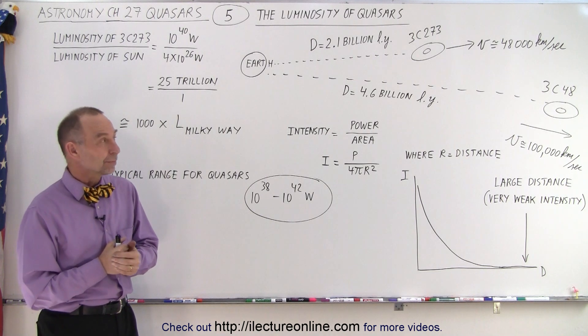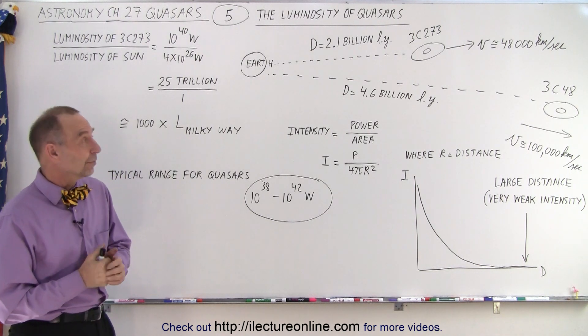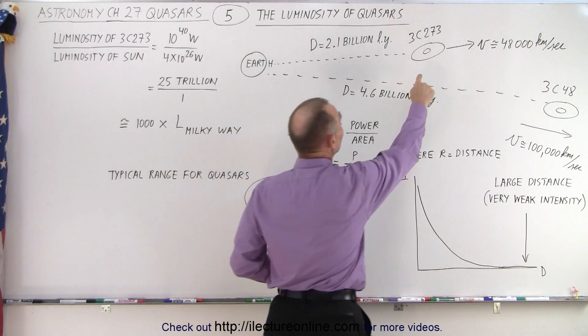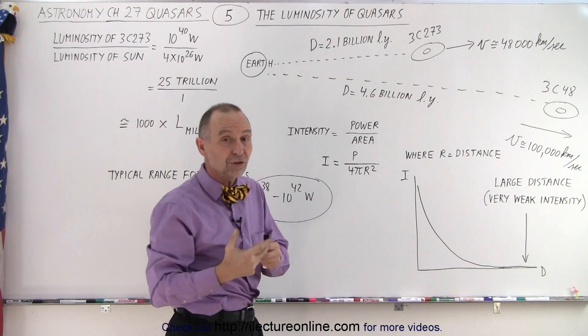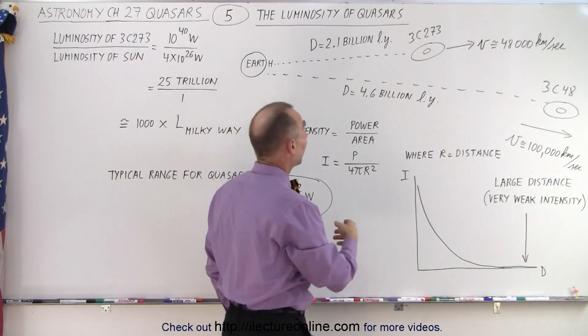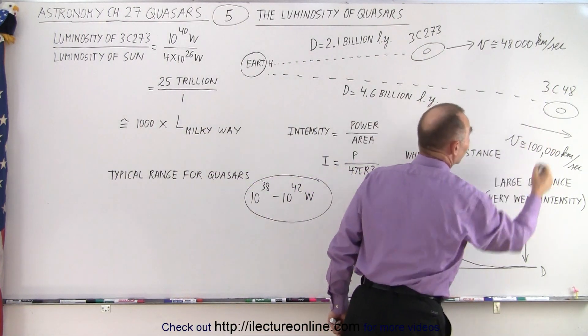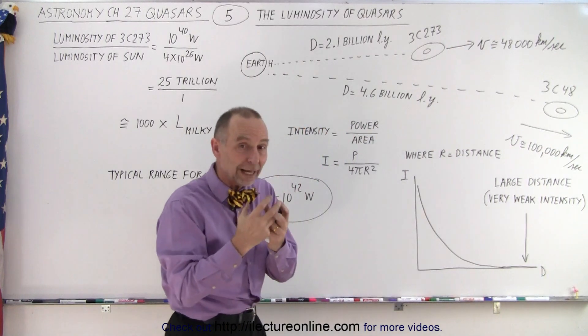So what are those two galaxies there? Those two galaxies? Well, the first one is 3C273. So that's the quasar for which we first discovered the speed and what it actually was.